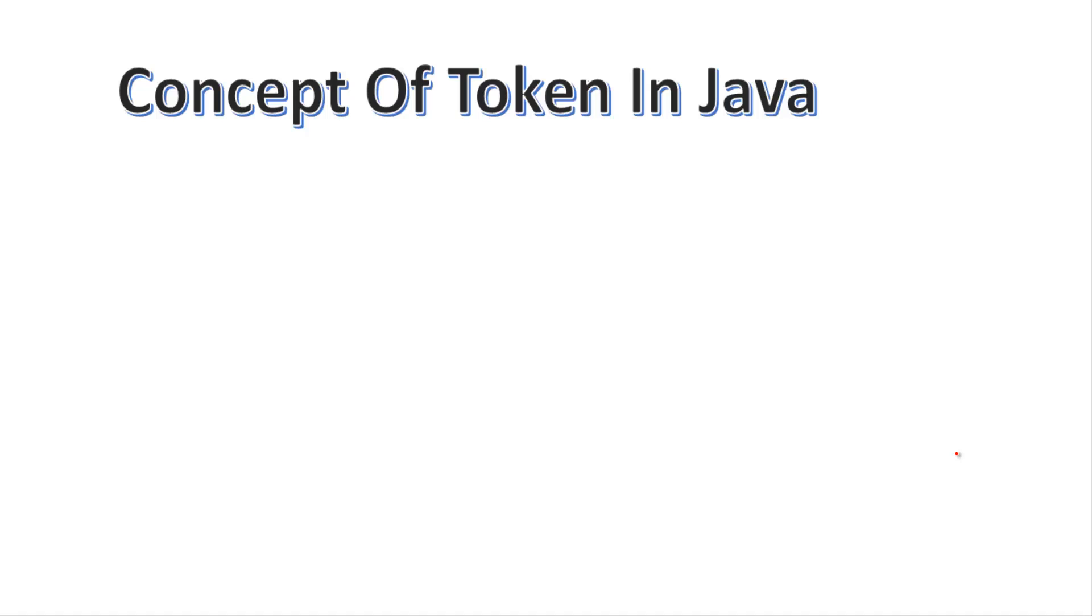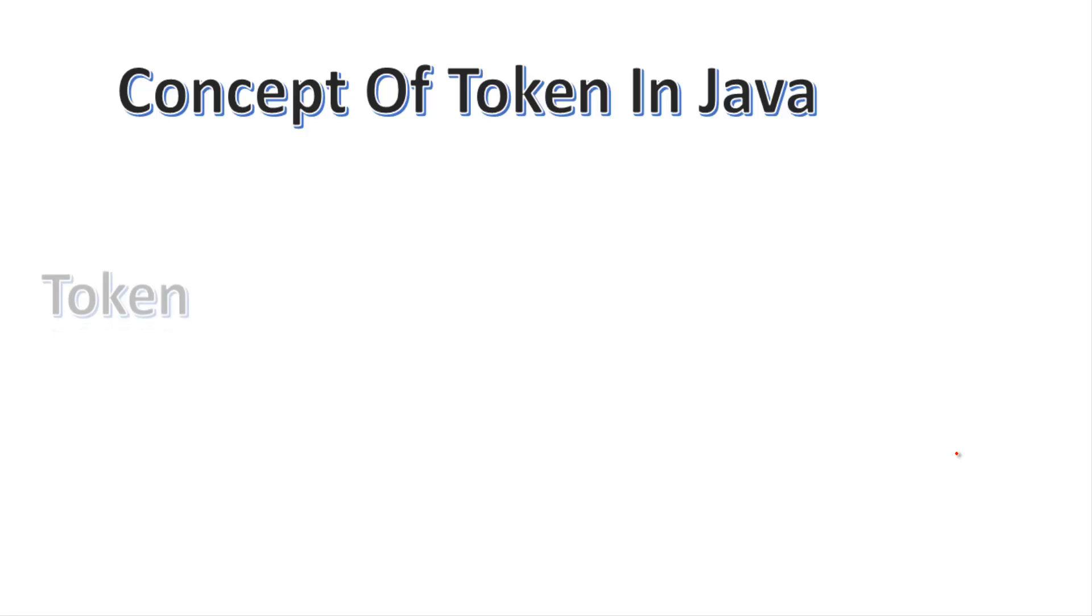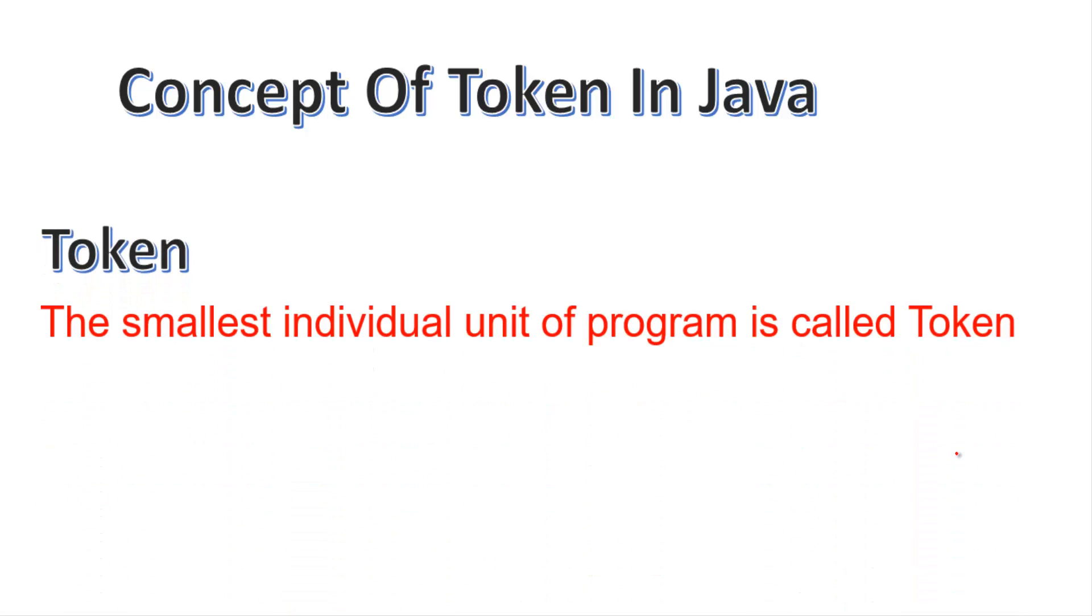Hi friends, in this video we will study the concept of token in Java. Basically, what is a token? The smallest individual unit of a program is called a token. Like see here: a = b + 10. a = b + 10.